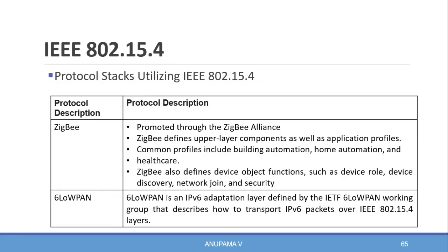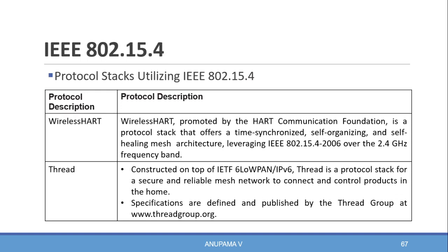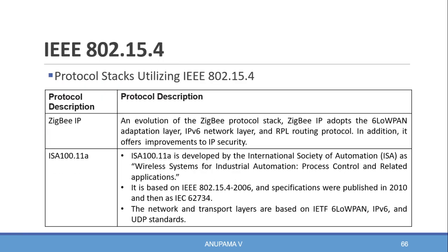These protocol stacks make use of IEEE 802.15.4 at the physical and link layer levels, but the upper layers are different. The protocol stacks that utilize IEEE 802.15.4 at the physical and link layer level include ZigBee, 6LoWPAN, WirelessHART, Thread, ZigBee IP, and ISA 100.11a.